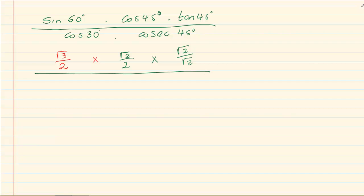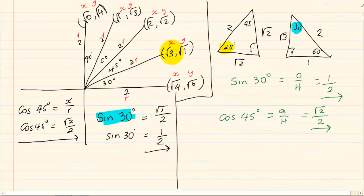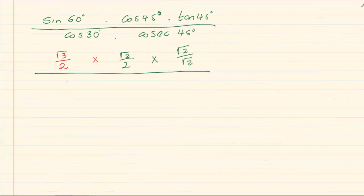Doing the same thing. Cos 30. Cos 30 is X over R. So it's root of 3 over 2. So it's root of 3 over 2.